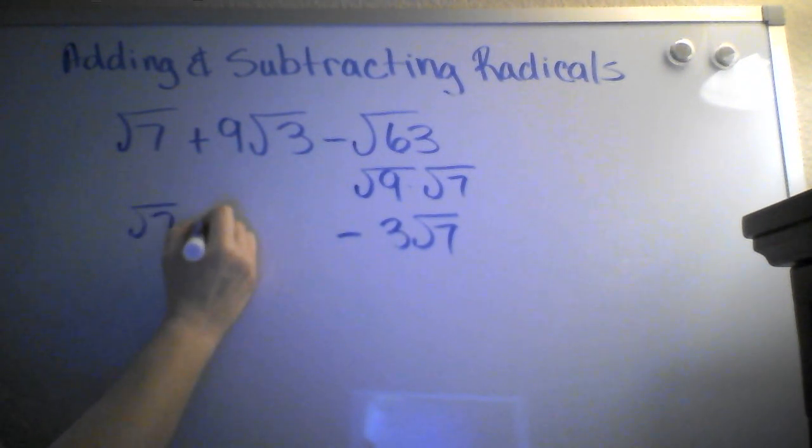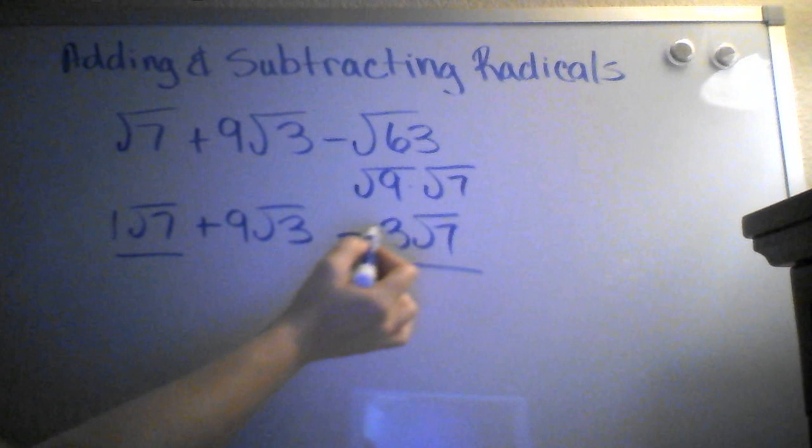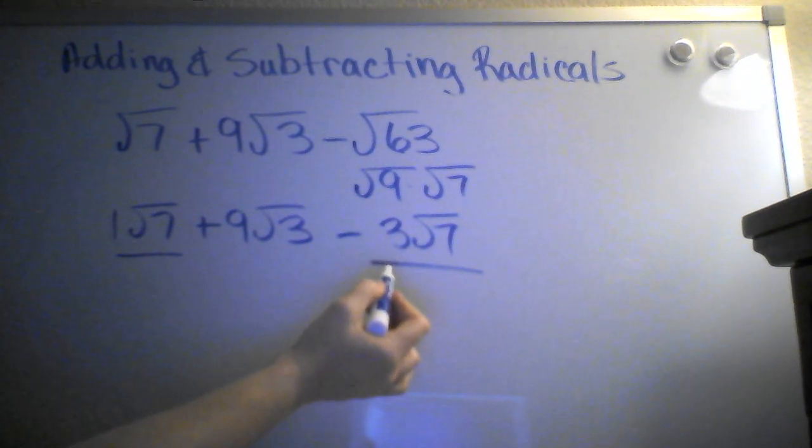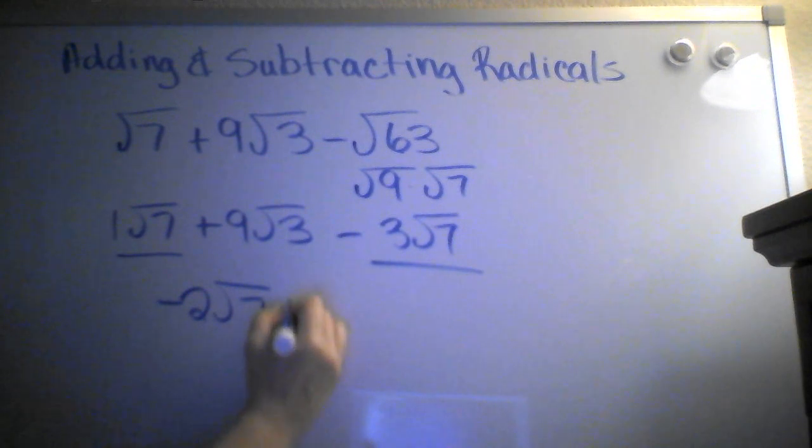So now I have radical 7 plus 9 radical 3, minus 3 radical 7. And so now I can add these two terms together because they're radical 7s. There's an understood 1 here, and this is minus 3 radical 7. So if I combine those together, I get negative 2 radical 7 plus 9 radical 3. And that's all I can do with that because I cannot add a radical 7 and a radical 3 together. So this problem is done.